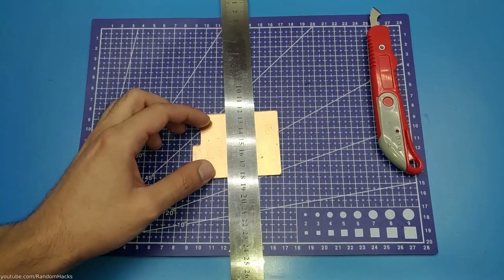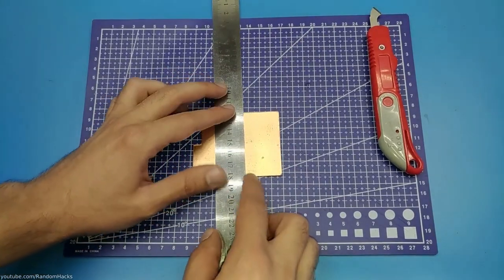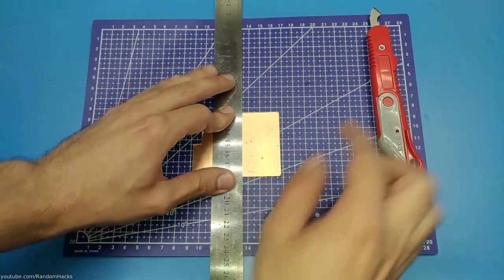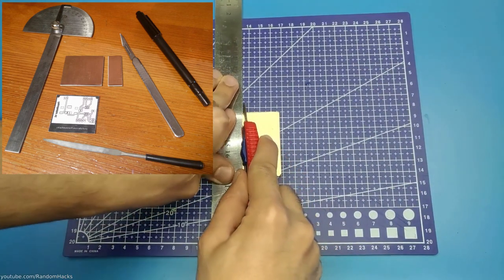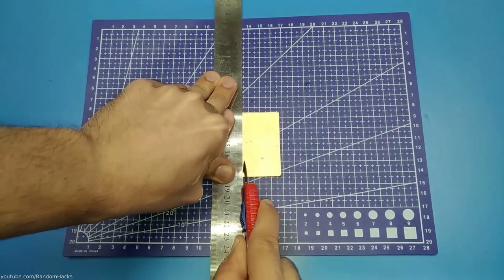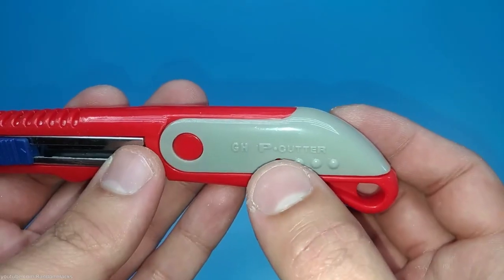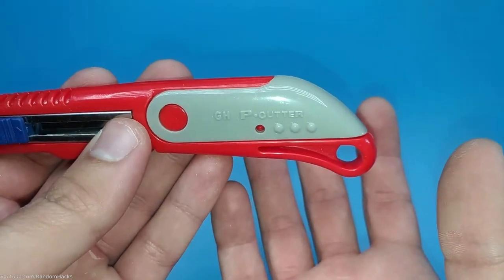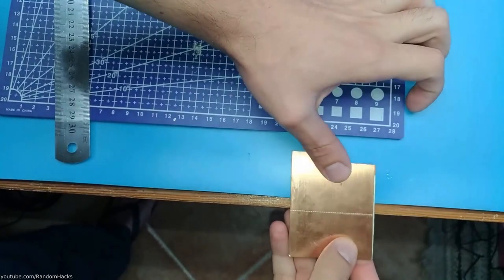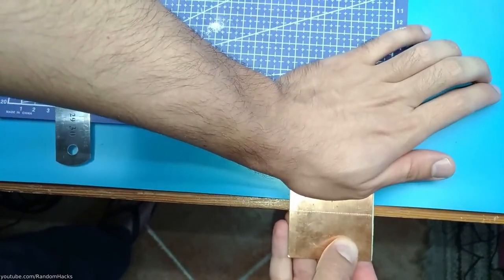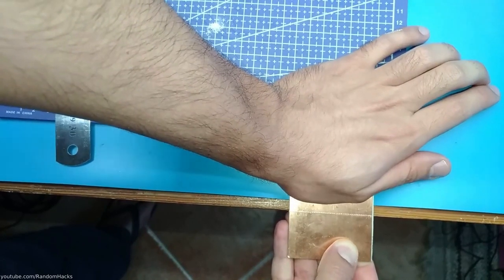First I cut the 1.6 mm single sided copper clad to the size of my design. I used a scalpel and a metal ruler. I've since discovered that an acrylic cutting knife works a lot better for this. Basically you score the board a few times and then you align that score on the edge of a table and bend it and you get a reasonably clean cut.